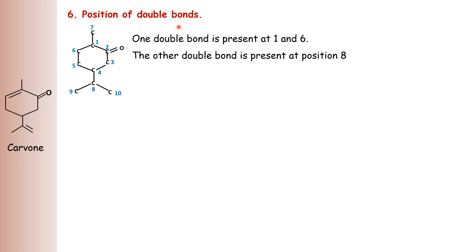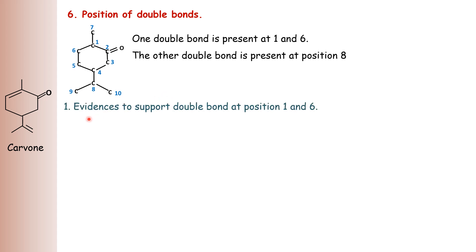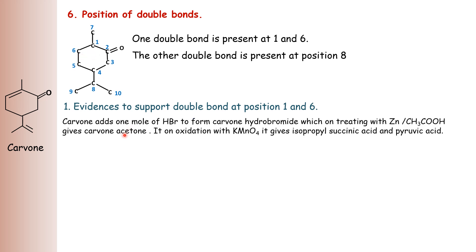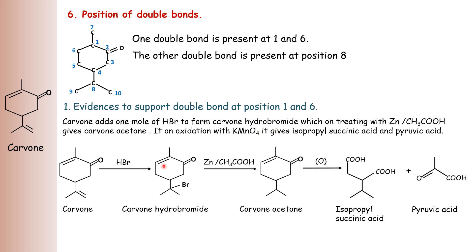Then we have to see the position of double bonds. One double bond is present between positions 1 and 6, and another double bond is present at position 8. Let us see the evidences to support the double bond at position 1 and 6. Carvone adds one mole of hydrogen bromide to form carvone hydrobromide. When carvone is treated with HBr, we get carvone hydrobromide by addition of HBr across this double bond.